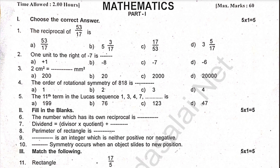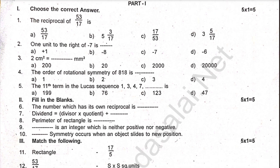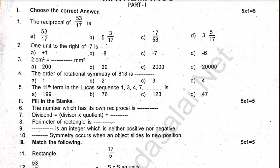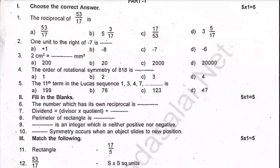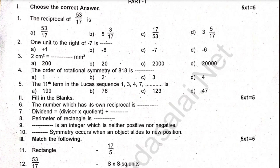Dash symmetry occurs when an object slides to a new position. Next, match the following. Rectangle 53 by 17. The opposite of 7 and 89. Reciprocal of 5 by 17. Area of a square — match it.